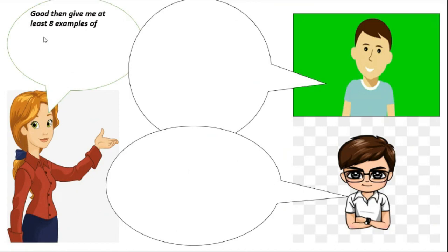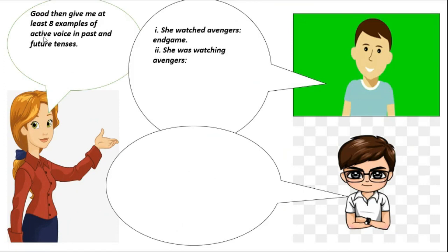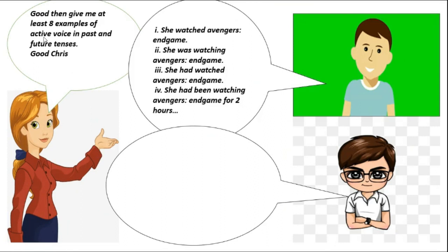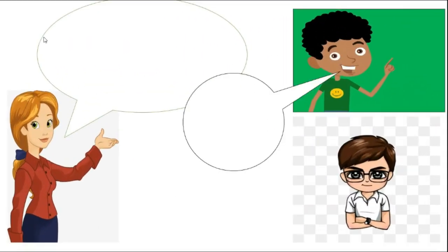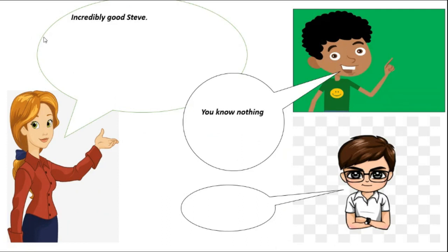Then give me at least eight examples of active voice in past and future tenses. She watched Avengers Endgame. She was watching Avengers Endgame. She had watched Avengers Endgame. She had been watching Avengers Endgame for two hours. Good, Chris. Now, Steve, continue this. She will go for tuition. He will be playing video games. He will have done ten songs till then. She will have been playing piano for an hour. Incredibly good, Steve. You know nothing except Endgame, Chris.